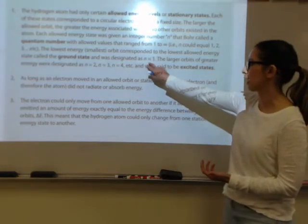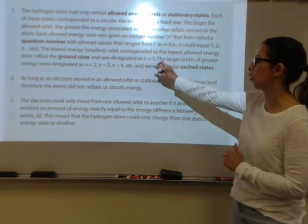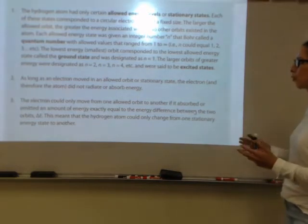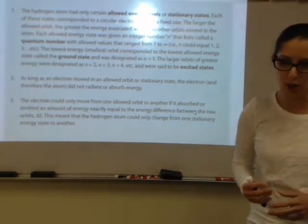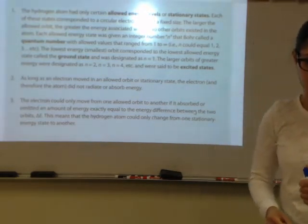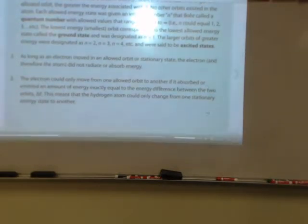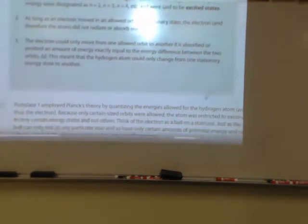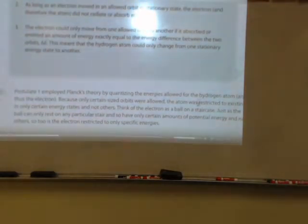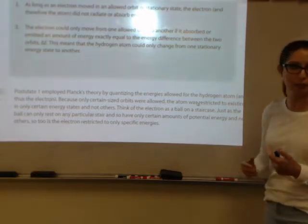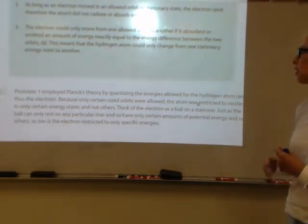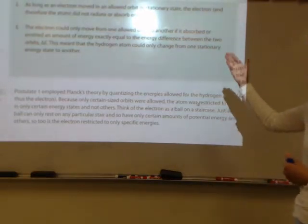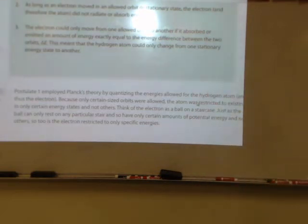The lowest energy or smallest orbit — the ground state — has N equals one, and the larger orbits are N equals two, three, and four, which are called the excited states. As the electron moves within its stationary state it doesn't give off or absorb energy, but if it moves between energy levels, whatever the difference is between those energy levels, it will emit that energy when the electron relaxes back down to its stationary state.